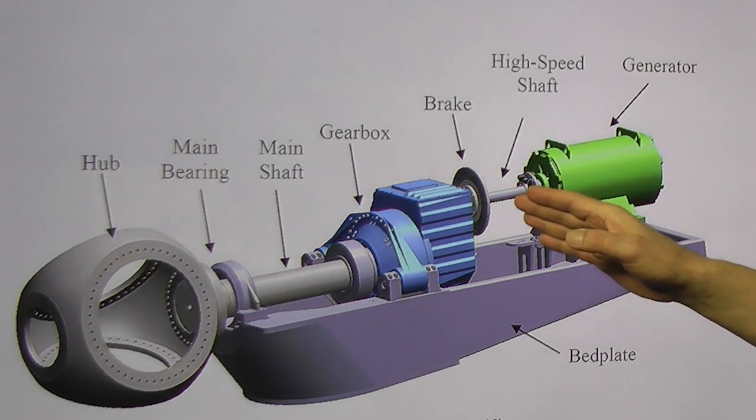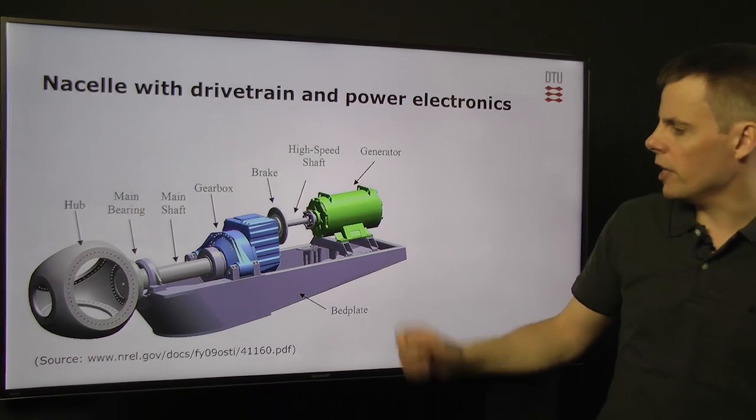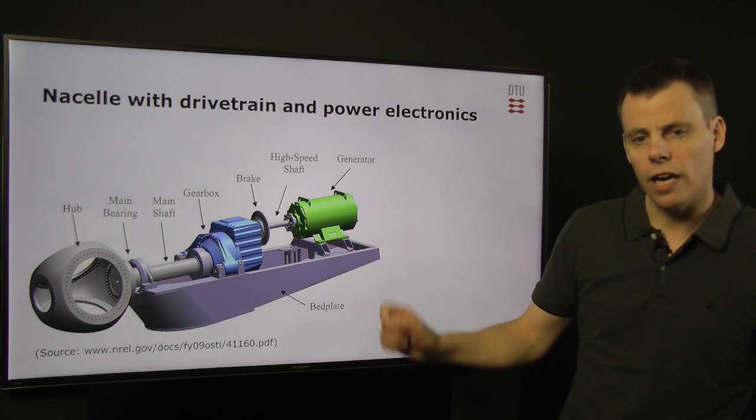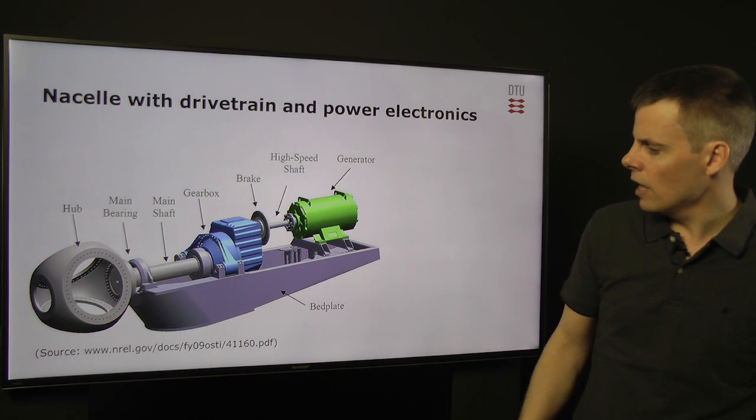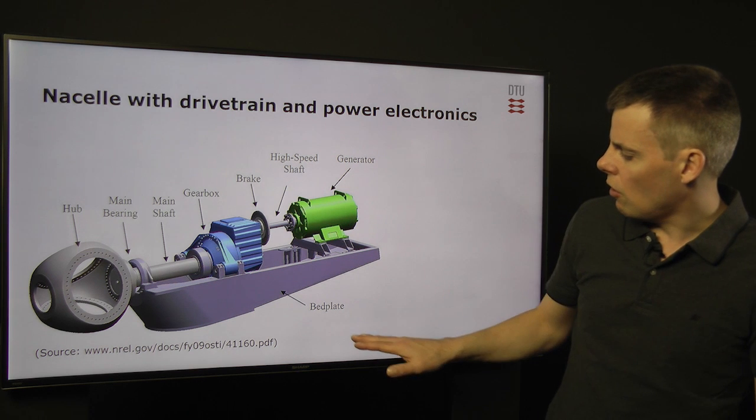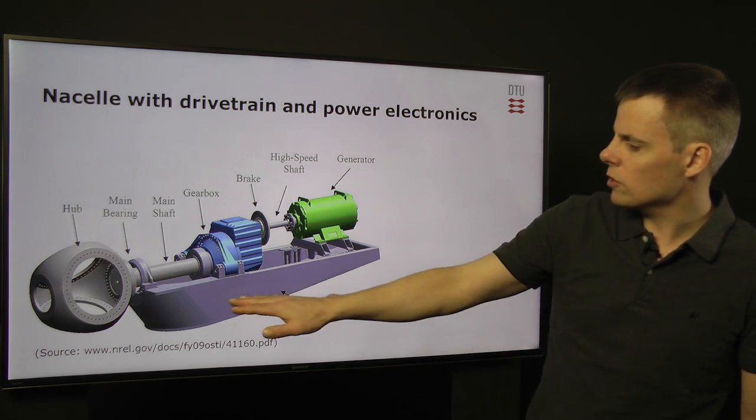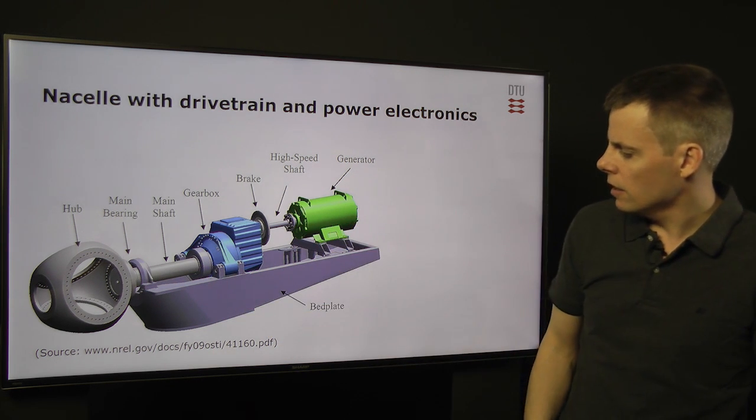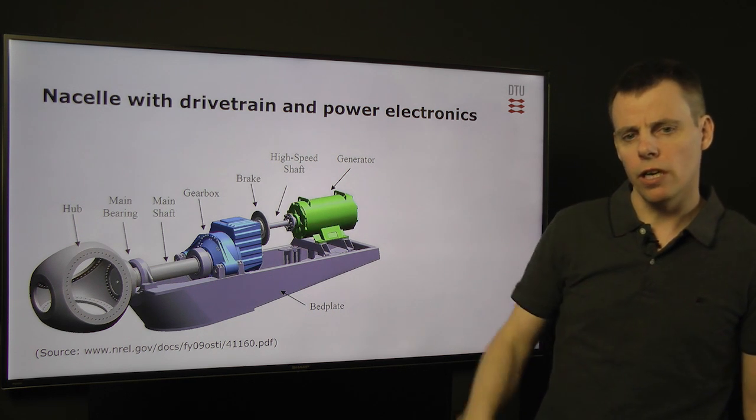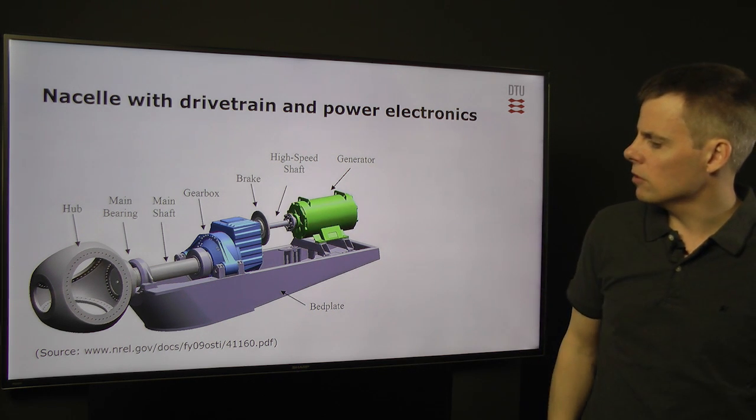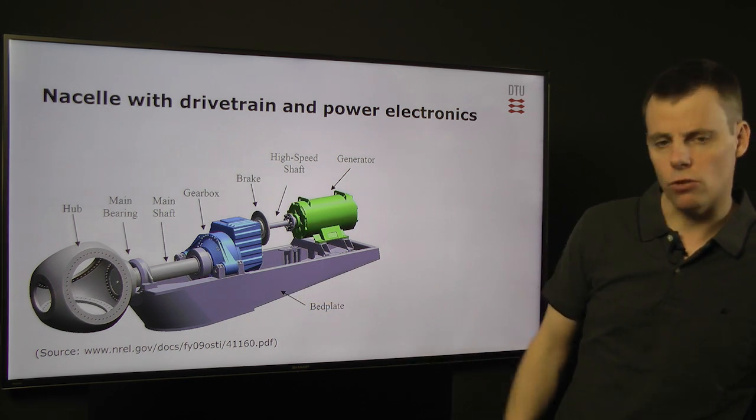On the high-speed shaft, we have also the mechanical brake for braking the turbine at standstill. And all this is mounted on the bed plate, which forms the entire nacelle. And this bed plate can then also turn in the yaw direction on the tower top, using a yaw drive.